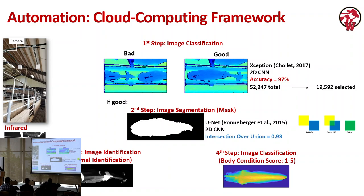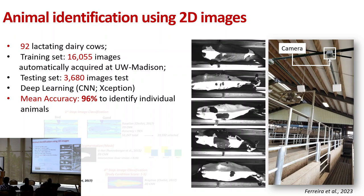When the cow is walking and the image is captured, all data goes to the cloud. There, the system processes model one, model two, model three — however many models I have — for body condition score, body weight, biometrics, length, height, and so on. You probably ask yourself how you identify cows based on the black and white coat pattern. It's actually very accurate — both our work and literature show similar results. Based on this coat pattern, we can recognize individual cows.